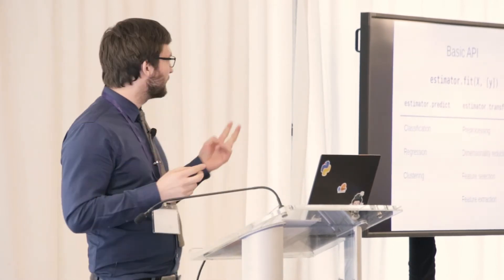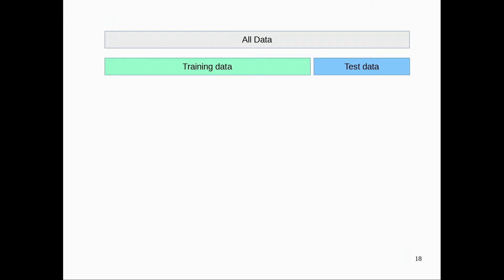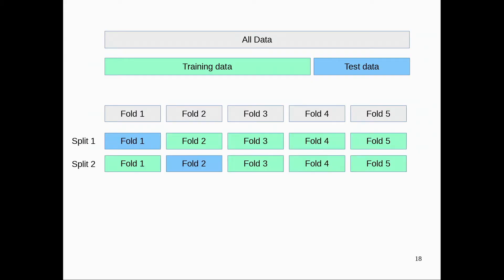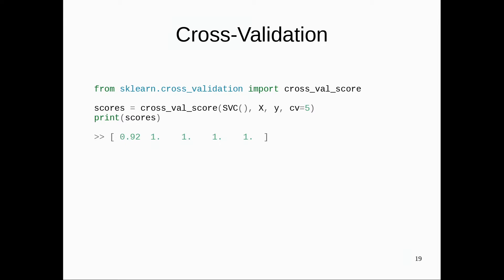We also have more building blocks for standard machine learning tasks, particularly for model evaluation and selection. There are tools to do train-test split, which is very simple. Often, instead of a train-test split, you want to use cross-validation — where you split your data into, say, five folds, hold out one fold, and train on the others. This gives you a more robust estimate of the generalization performance. There's a function called cross_val_score in scikit-learn for this.